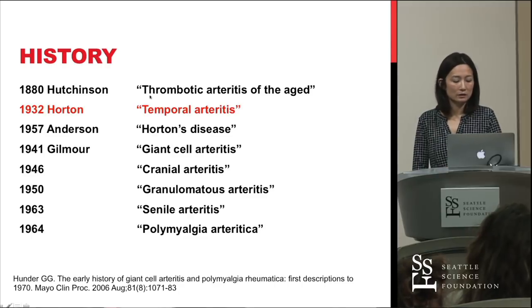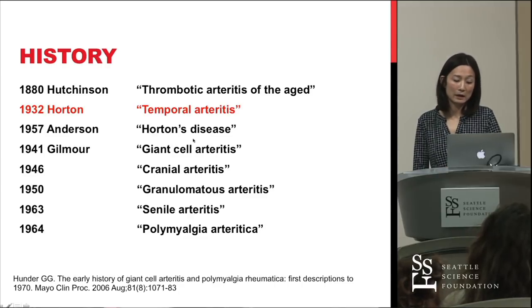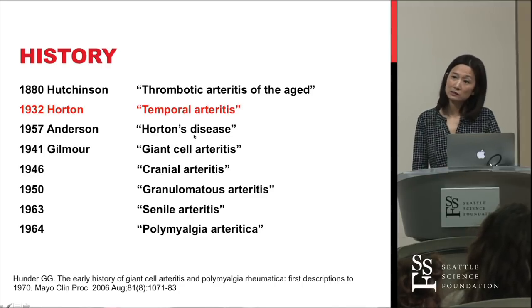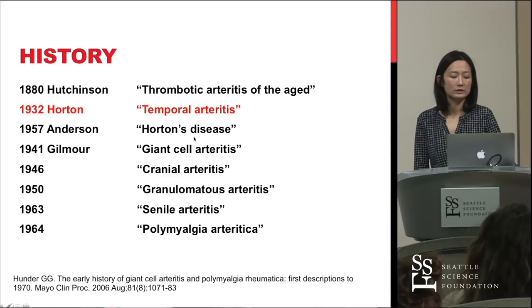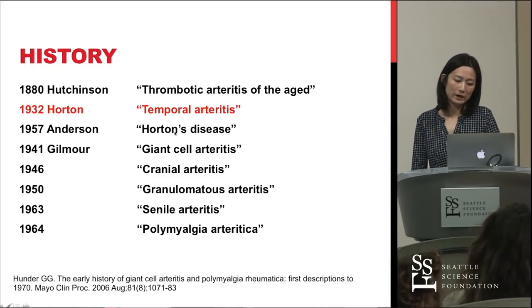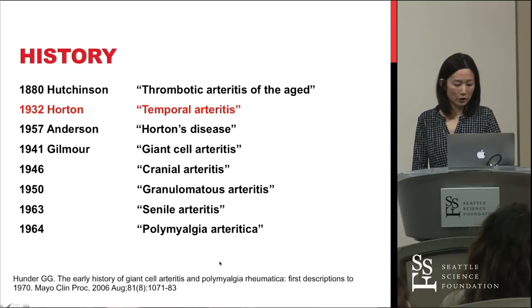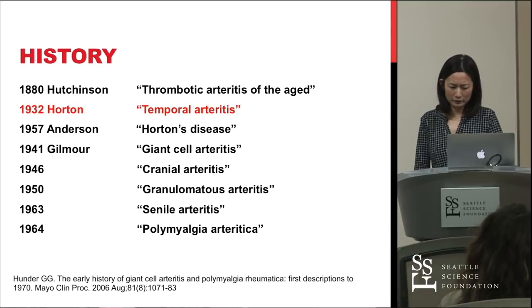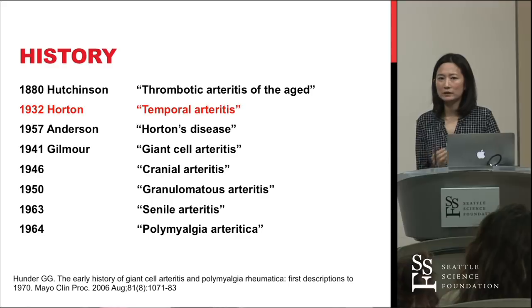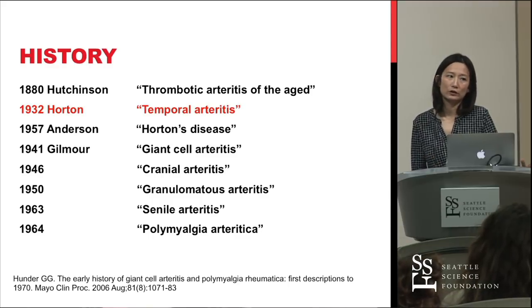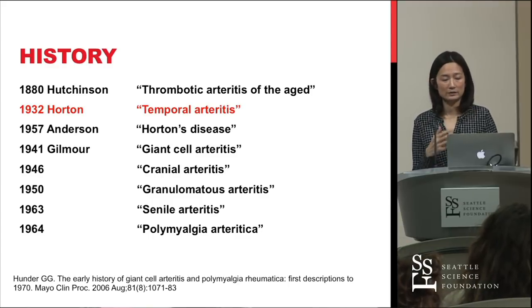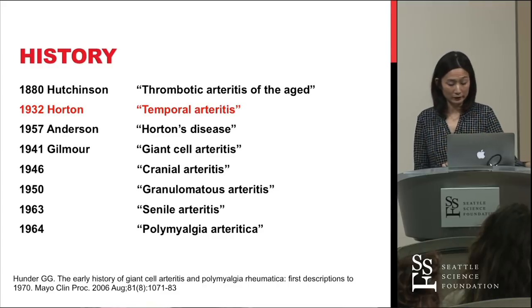Other authors wanted to name this disease 'Horton's disease' because he was the original one to describe it in more detail. What has stuck around is 'giant cell arteritis,' though there are flaws with that name as well, since not every patient with giant cell arteritis has giant cells in the pathology.